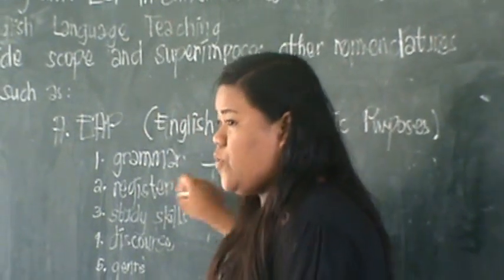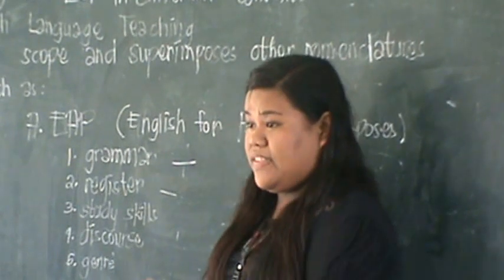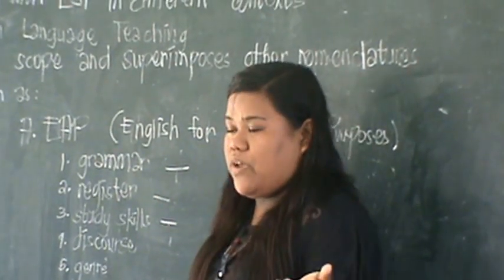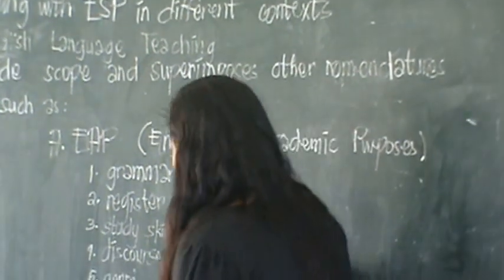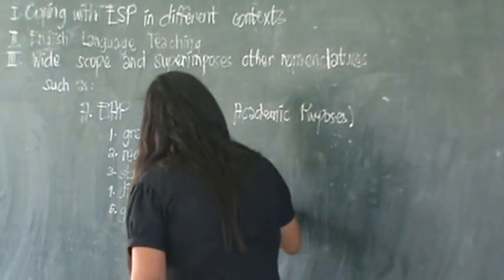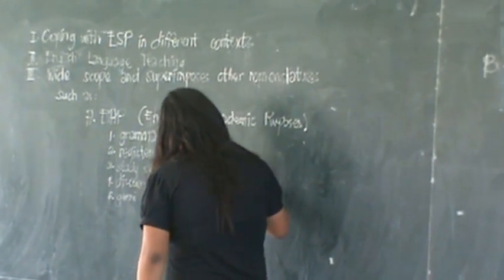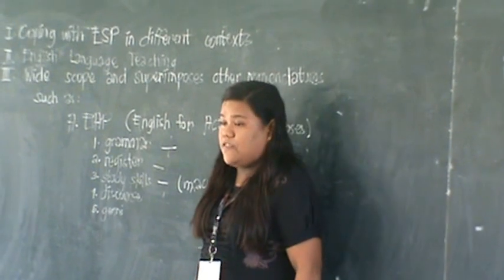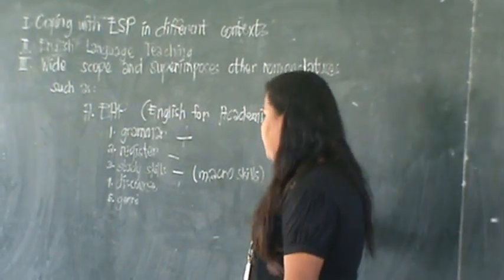When you say register, it means the styles of how language is spoken or written. Study skills — according to the reference — are a method of skills such as reading, writing, speaking, listening, and also viewing.